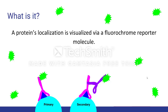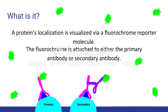In the diagram below, the blue triangles represent the antigens on the cell membrane, and the pink and purple Y shapes represent the antibodies, which have a green fluorochrome attached. The fluorochrome molecule can be attached to either a primary antibody or a secondary antibody.